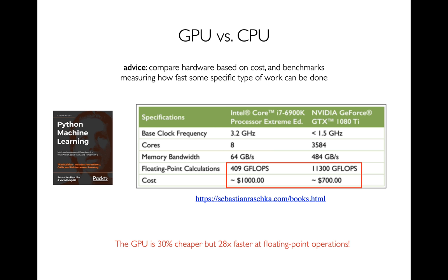One of the stats you might see is cores, which tells us how many things can we really be doing at once. I'm borrowing an example from a machine learning book by Sebastian Raschka, a professor at UW-Madison. They're comparing an Intel Core i7 CPU to an NVIDIA GPU. The CPU has only eight cores while the GPU has something like 3,000 — so the GPU can do many more things at once.